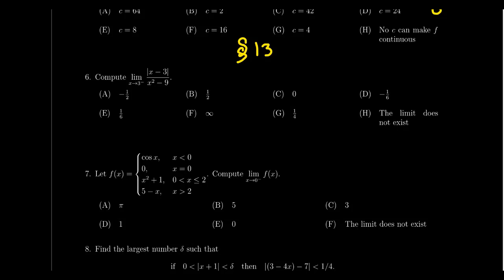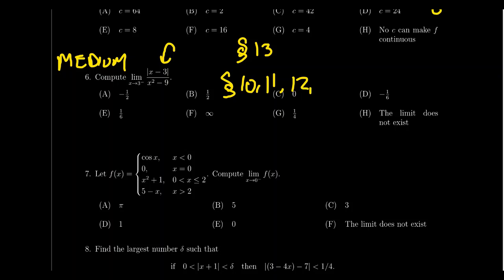Question number six will be another limit calculation — more of a medium difficulty one. Some things to look out for: this one might involve absolute values, which can be very tricky. We saw examples like this in lecture 10 about limit properties, and in the homework for lecture 11. Lecture 11 focused on the squeeze theorem, but the homework had some more moderate limit calculations. We also saw some in lectures 12 and 13 since continuity plays a role. This one is not simply plug and chug — you can't just plug in x = 3 because you end up with zero over zero. The fact that it's approaching from the left does change the answer compared to approaching from the right.